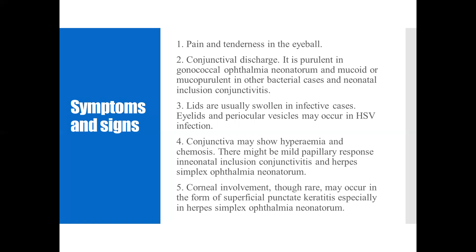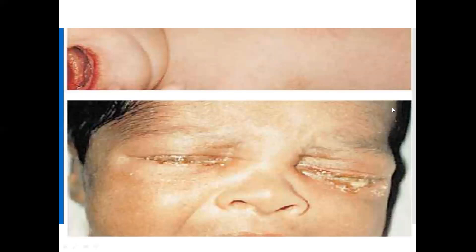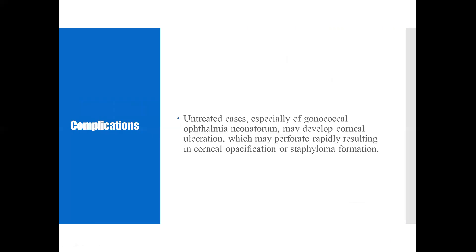Corneal involvement, though rare, may occur in the form of superficial punctate keratitis, especially in herpes simplex ophthalmia neonatorum. This diagram shows conjunctival discharge; you can also notice eyelid swelling. Regarding complications, untreated cases — especially of gonococcal ophthalmia neonatorum — may develop corneal ulceration, which may perforate rapidly, resulting in corneal opacification or staphyloma formation.